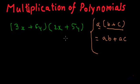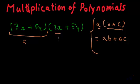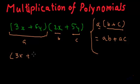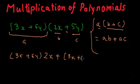The distributive property states that a multiplied by b plus c is equal to a multiplied by b, plus a multiplied by c. Here we have terms in a similar format. If we consider the first expression as a, and 2x as b, and 5y as c, then using this identity, we write: (3x plus 6y) multiplied by 2x, plus (3x plus 6y) multiplied by 5y.